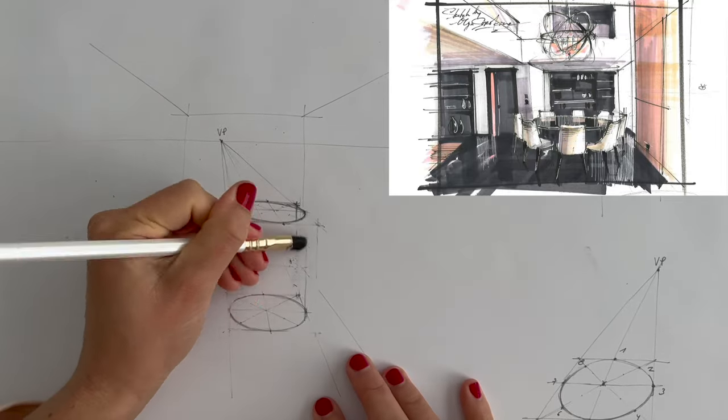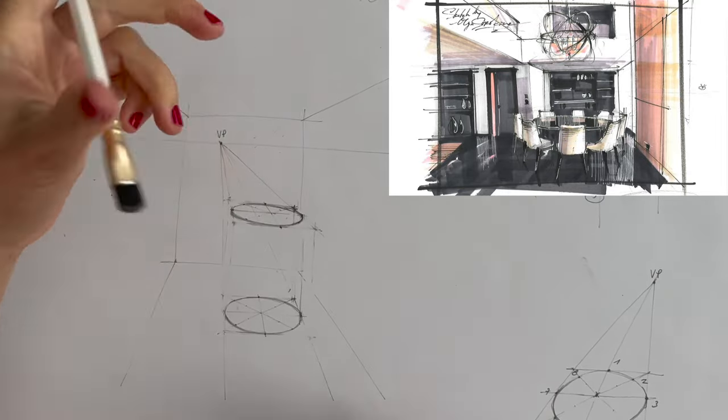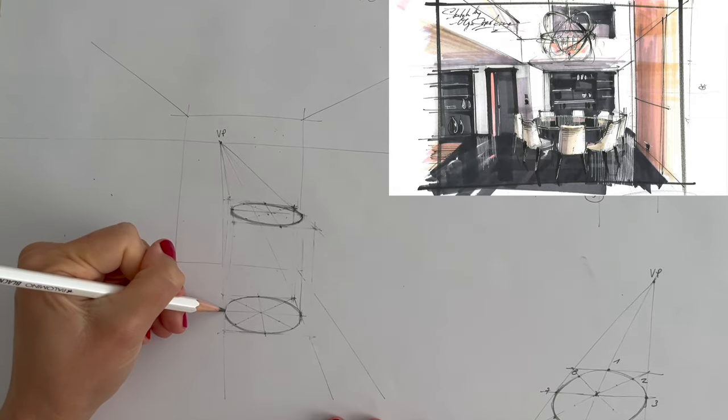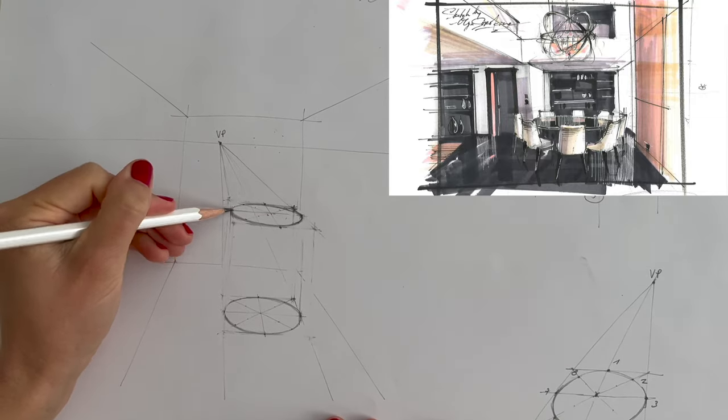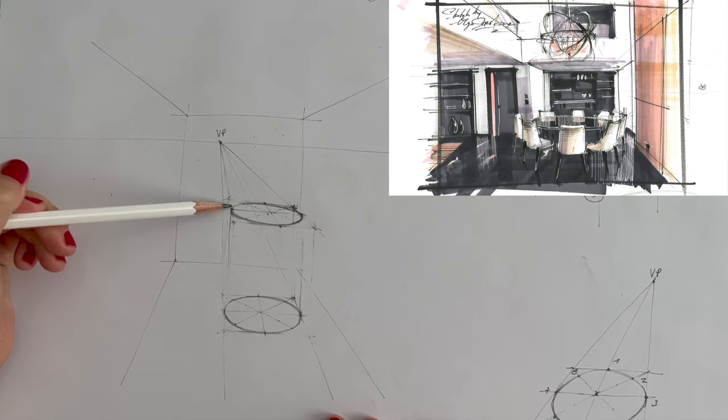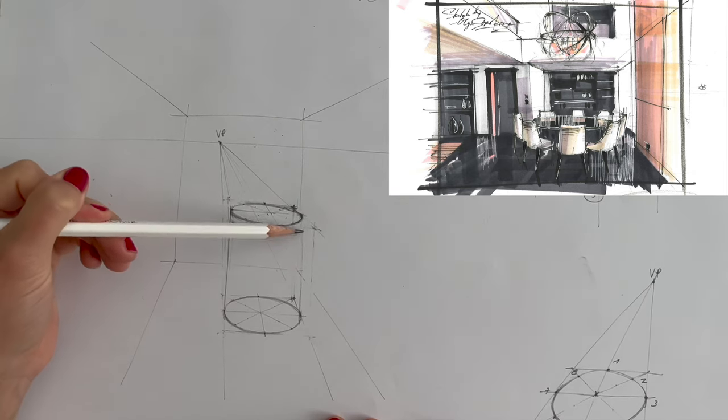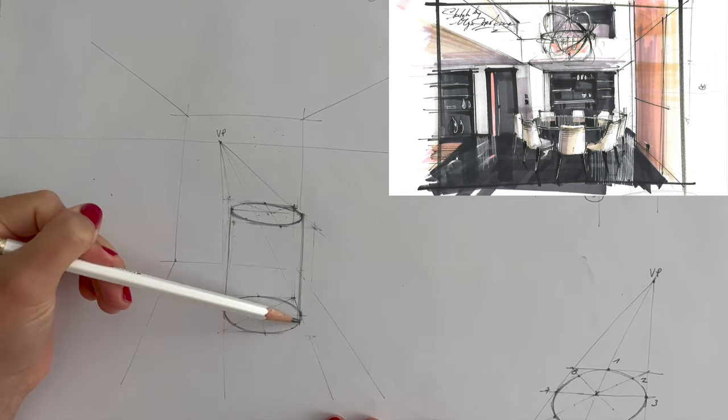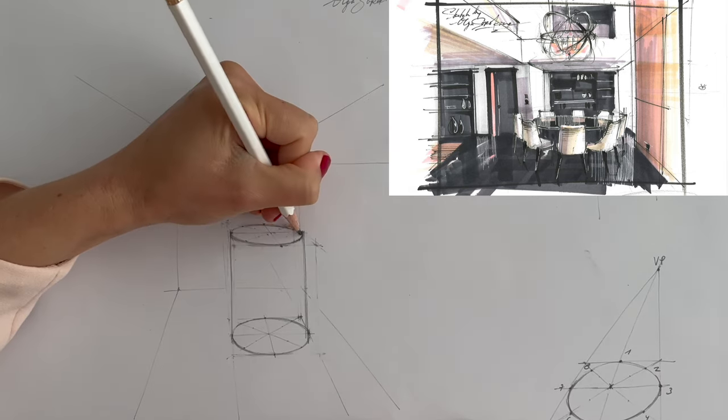So you can see this table in the center. Basically, it's a cylinder, this beautiful chandelier that consists of the circles, which look like ellipses in perspective. This is what you will be able to achieve when mastering perspective drawing.